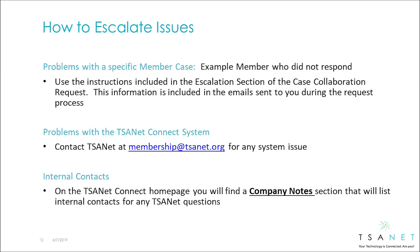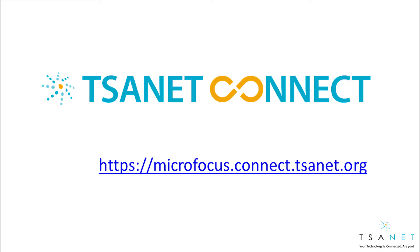Three types of issues may arrive that you need to escalate. The first is a problem with a specific case — use the escalation instructions that are included in all emails. For any type of system issue, contact TSAnet. On the TSAnet Connect home page, you also find a company note section that will include internal contacts that can be used as needed. Access TSAnet Connect now at your company login page.